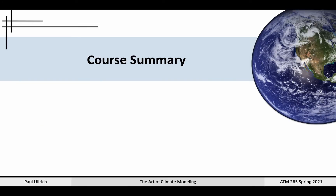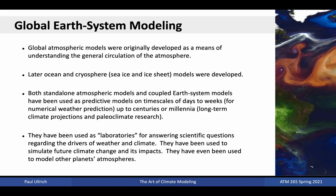Let's wrap things up and summarize what we've learned over this course. Going back to the very beginning, we talked about how atmospheric models were originally developed for predicting the weather. From these roots, it was immediately clear that they also provided an effective means of understanding the general circulation of the atmosphere, and subsequently the whole Earth system. Global atmospheric models, climate models, and Earth system models have been used as predictive models on timescales of days to weeks, primarily for numerical weather prediction, or up to centuries for long-term climate projections and paleoclimate research. Both standalone and coupled modeling systems have been used as virtual laboratories for studying the Earth system, exploring the past and future climate of the planet, and perhaps most importantly, to understand how climate change is impacting our planet.